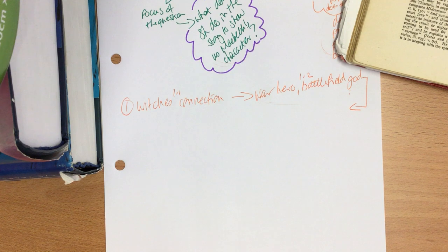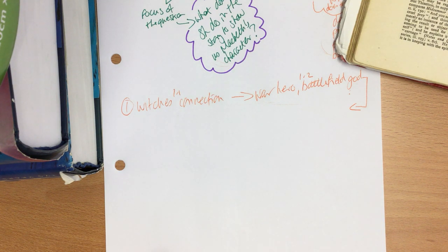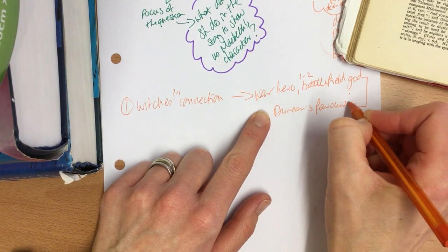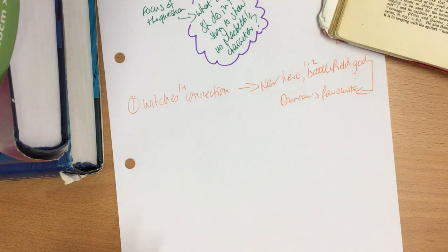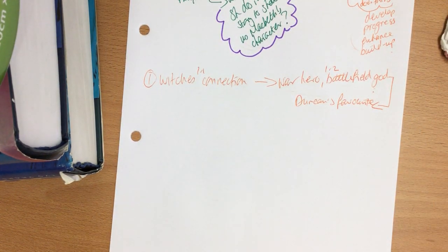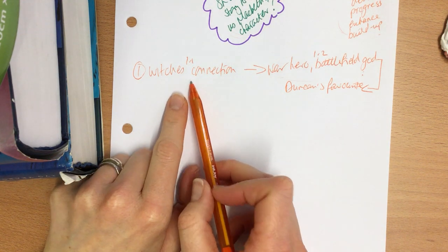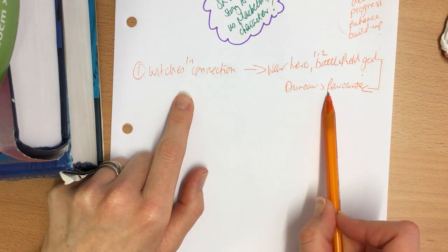Then what does Duncan say? He's Macbeth's cousin. Look at the words: 'valiant,' 'worthy.' What do we learn about Macbeth just from those words? Does he have Duncan's favour? Is he Duncan's favourite? So now we've got Duncan's favourite. You're looking for these little clues — these little clues open up such an avenue of analysis. They give us little aspects of his character, which is like a pebble in a pond — it just ripples out. So here he's marked by the witches, and here he's got Duncan's favour.